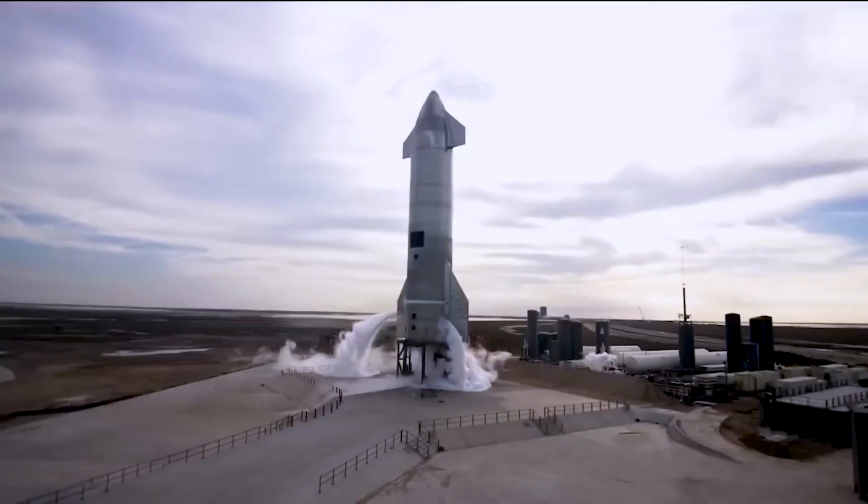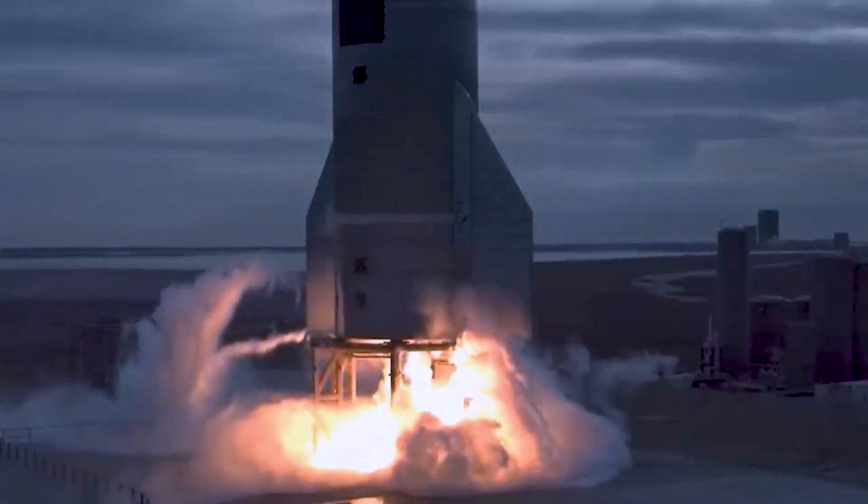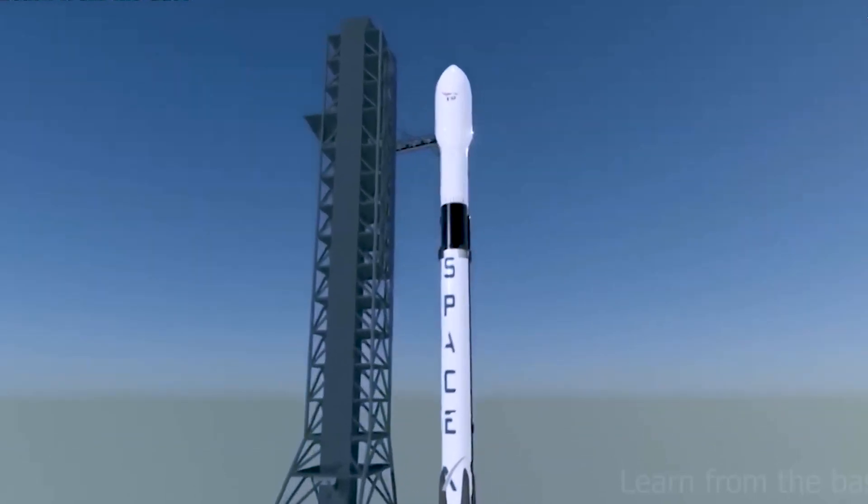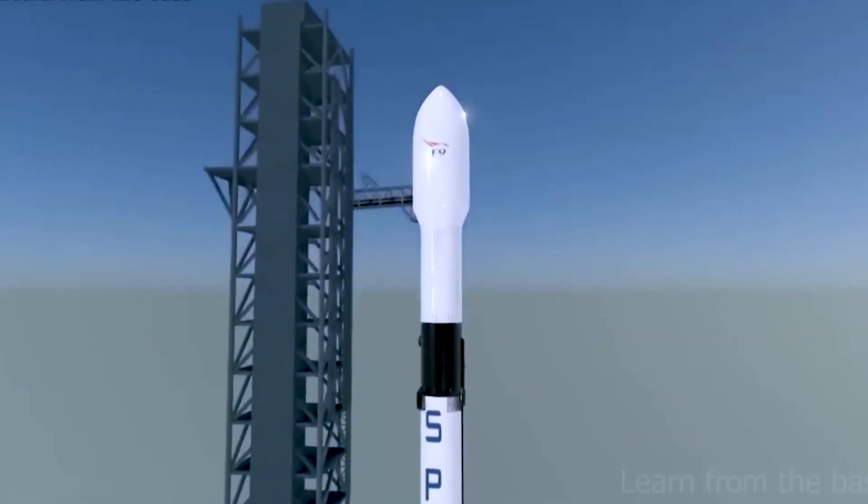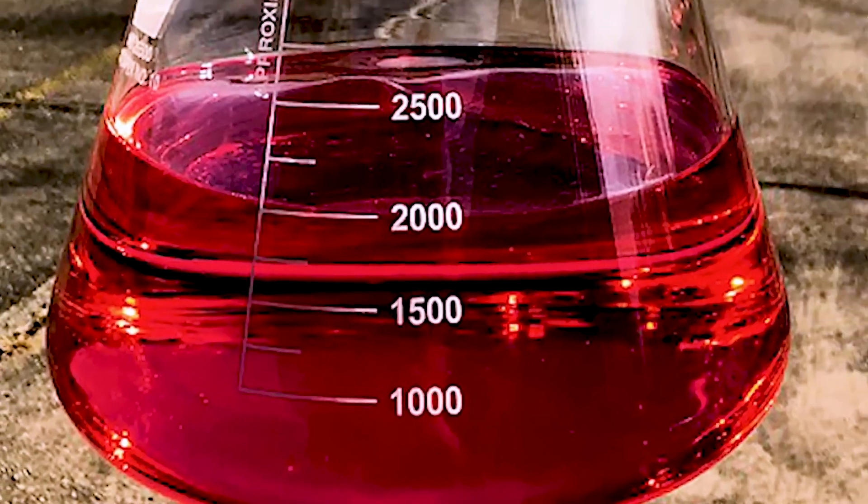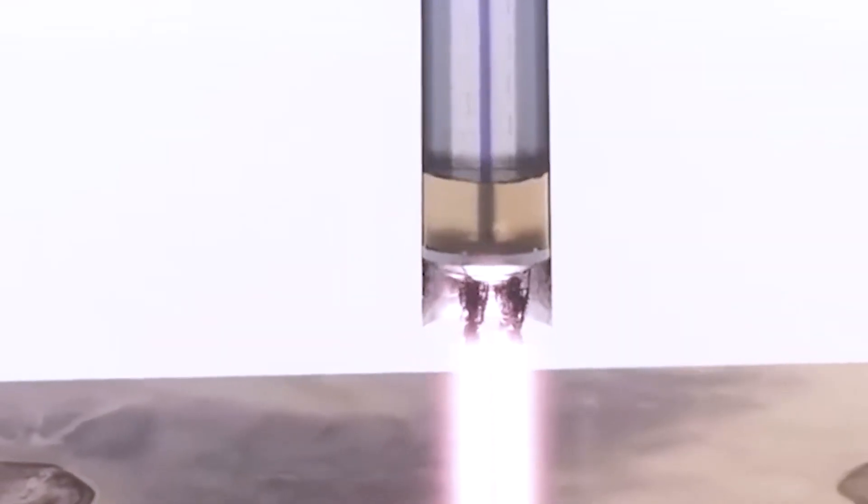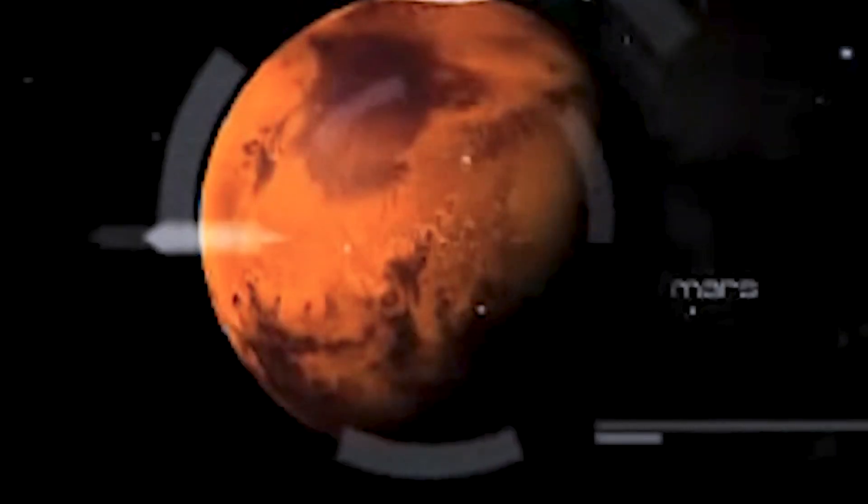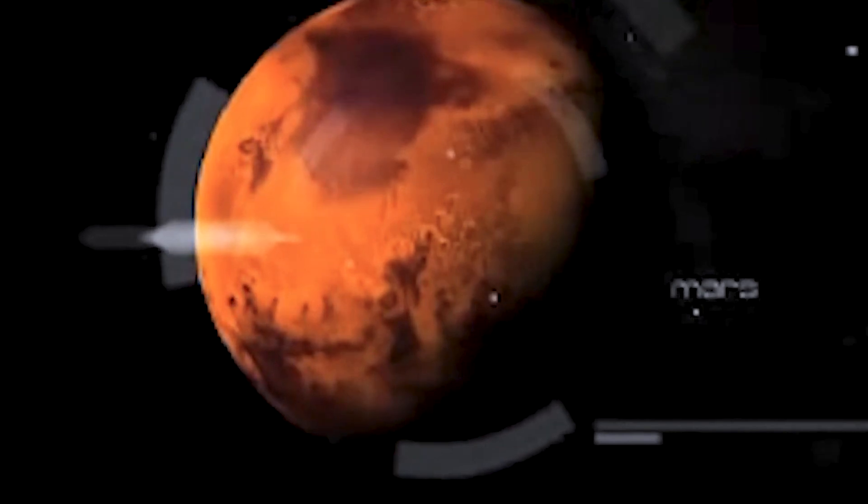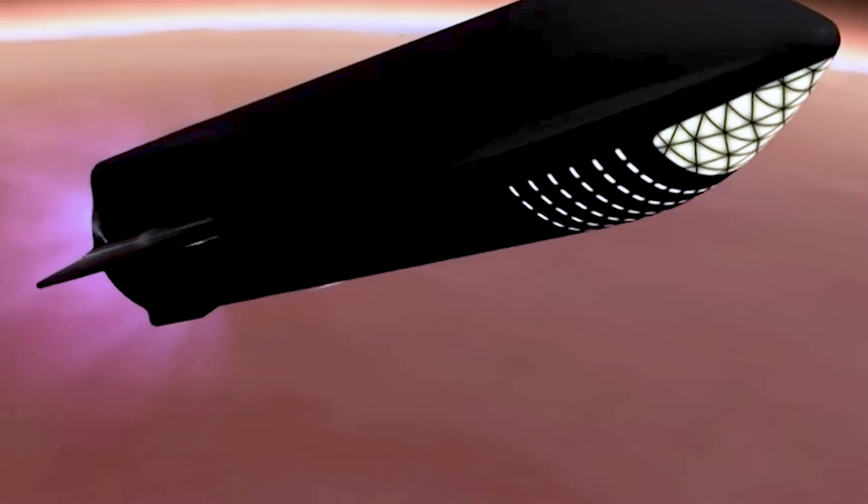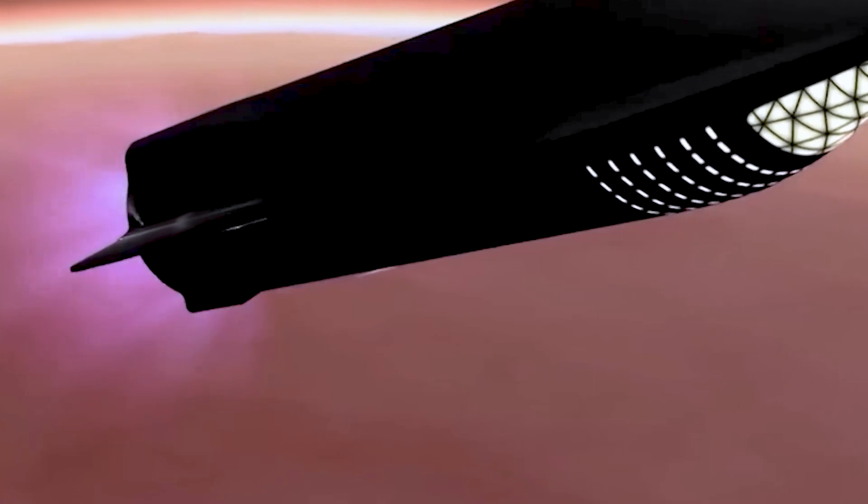But the wonders don't end there. Imagine a mind-boggling concept: the ability to refuel your spacecraft while floating in the vast expanse of space. As it turns out, approximately half of all the energy expended when embarking on a journey within our solar system, whether it's to the Moon, Mars, or even the outer planets, is spent simply reaching Earth's orbit.